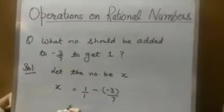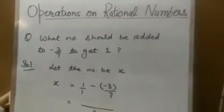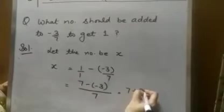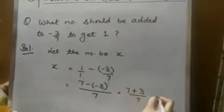1 minus minus 3 by 7. If we have nothing in the denominator, we can have 1. Again by taking LCM, 7 minus minus 3 with two negative signs, 7 plus 3 by 7, that is 10 by 7. This is the one method.